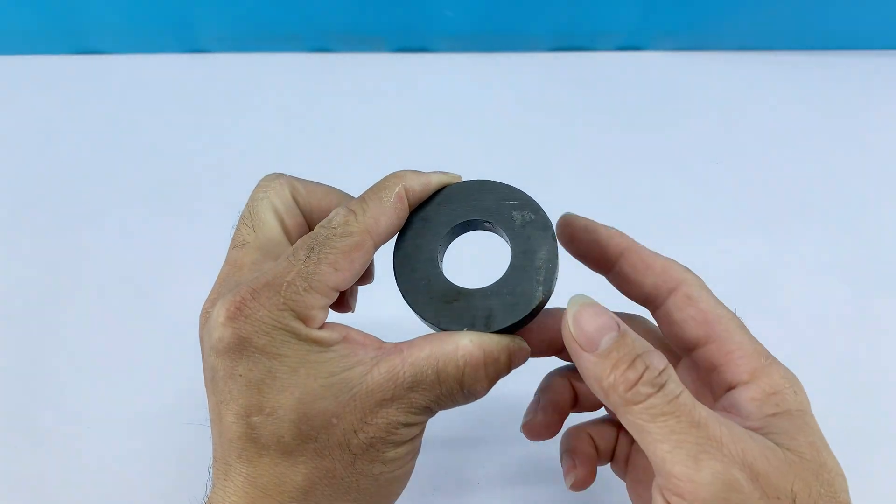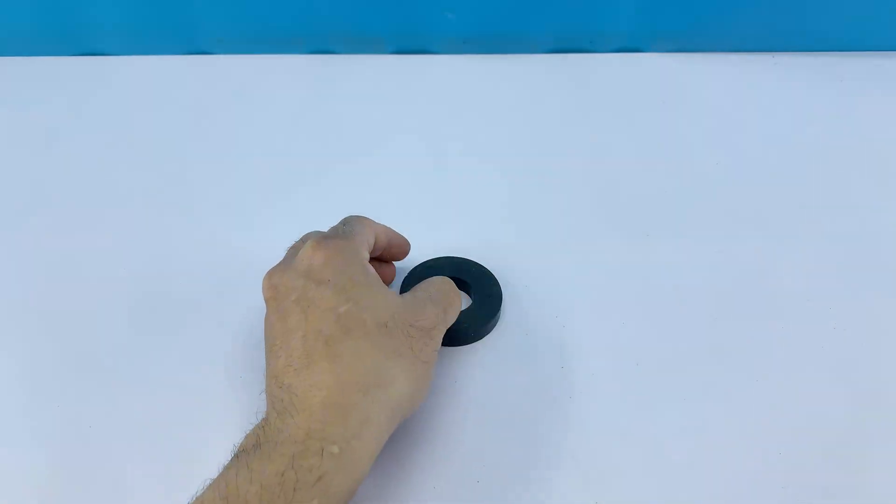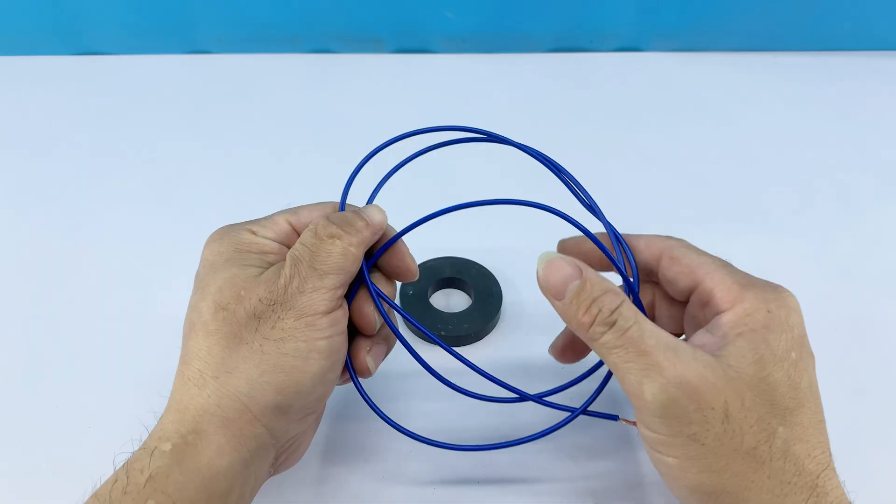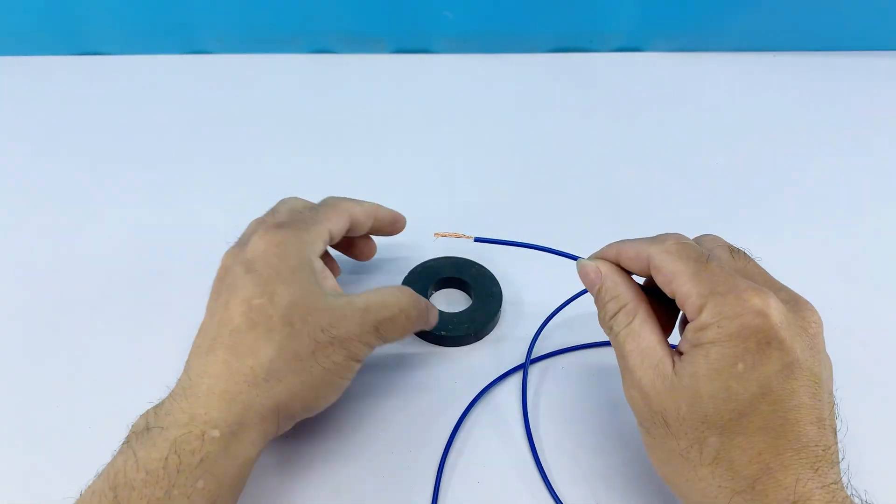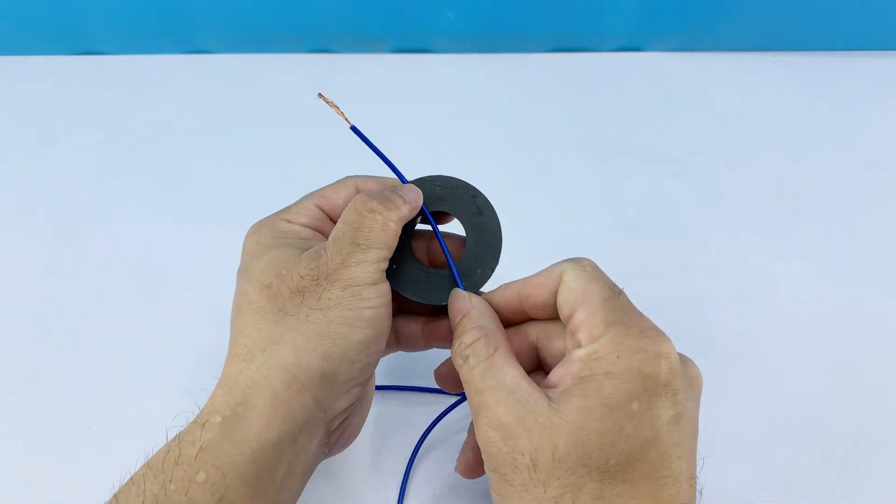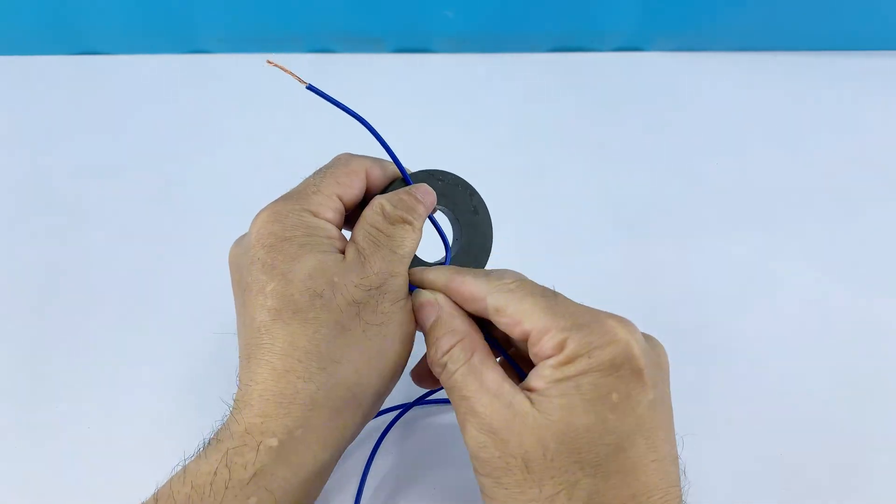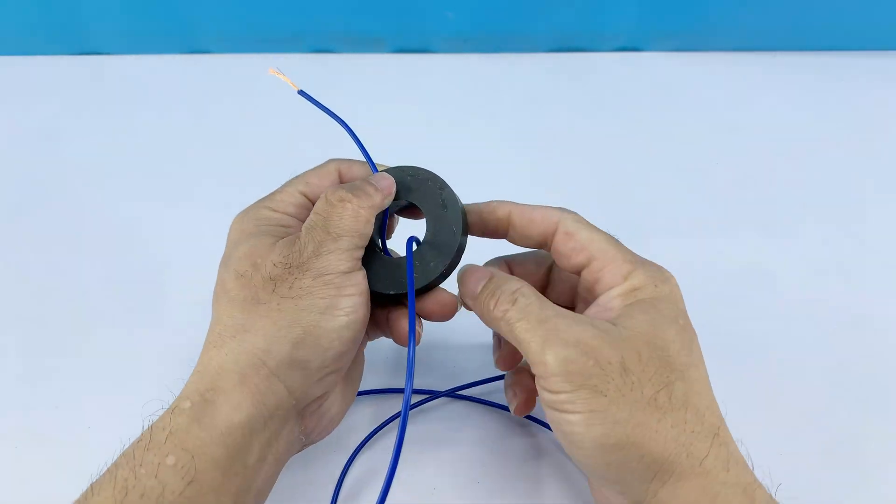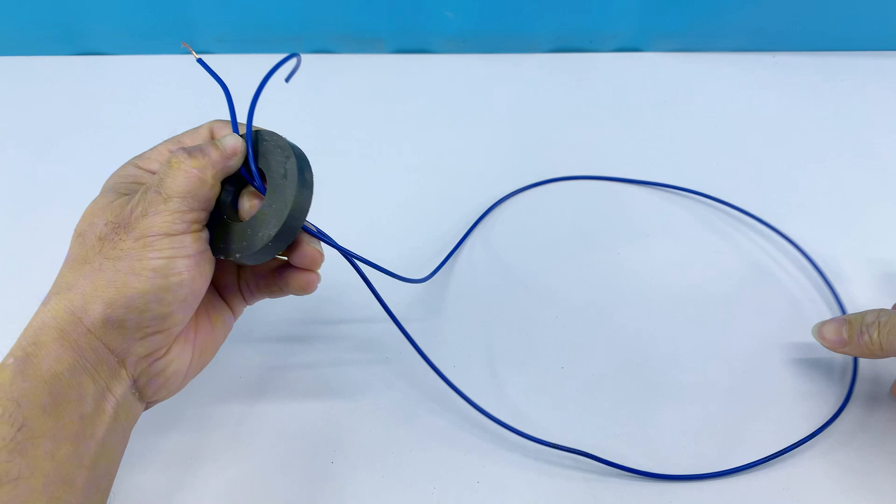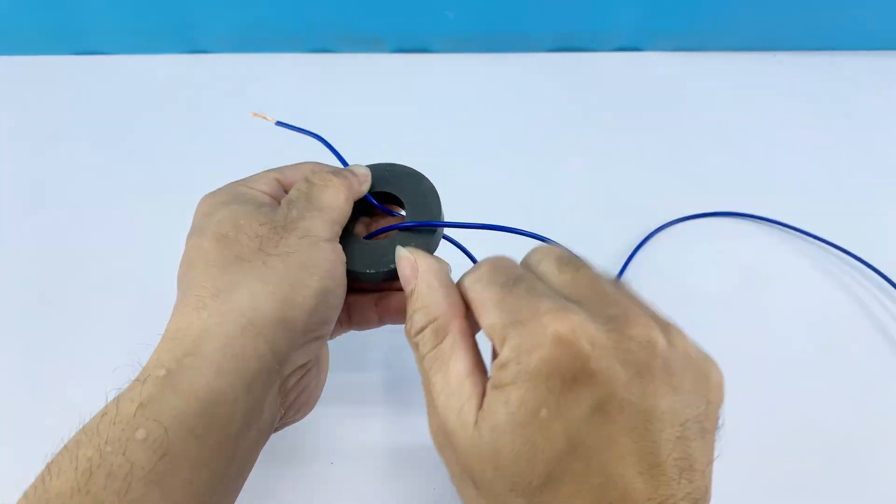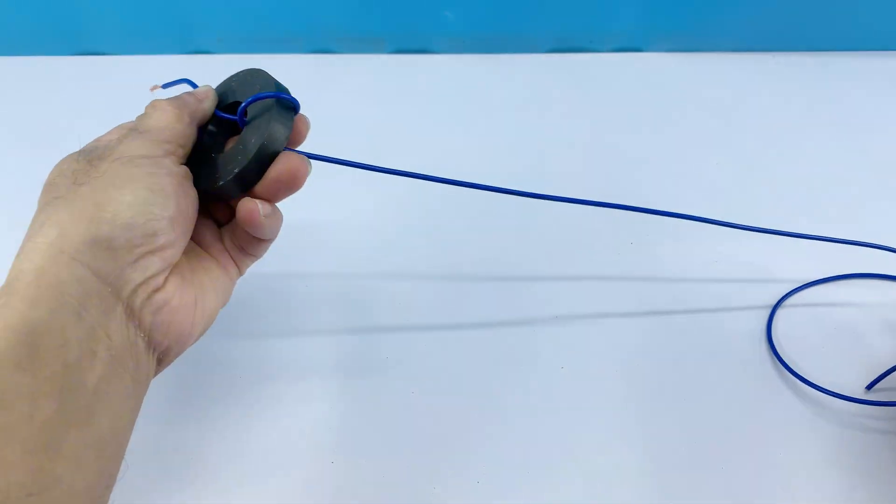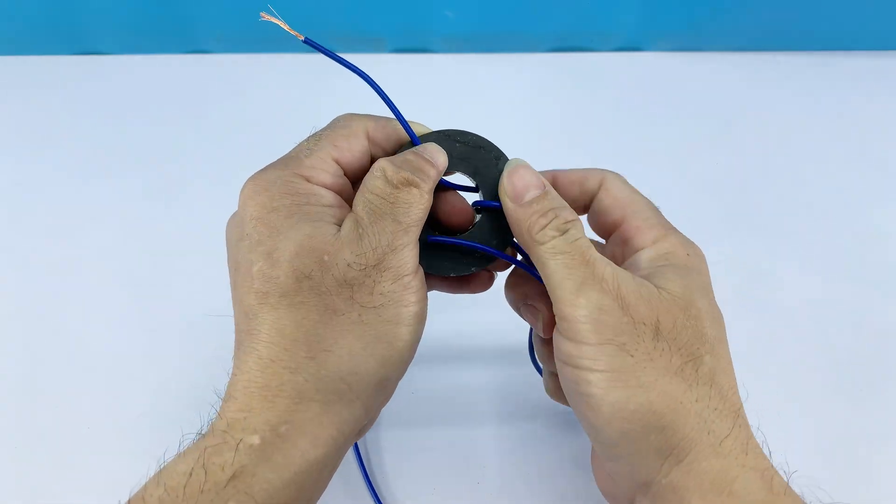With the first coil complete, I'll move on to the second ferrite ring. For this one, I'm using a blue insulated wire. Just like before, I'll meticulously wrap this wire around the second ferrite ring, creating another coil. This dual coil setup is designed to enhance the magnetic field and induction, making our device more powerful.